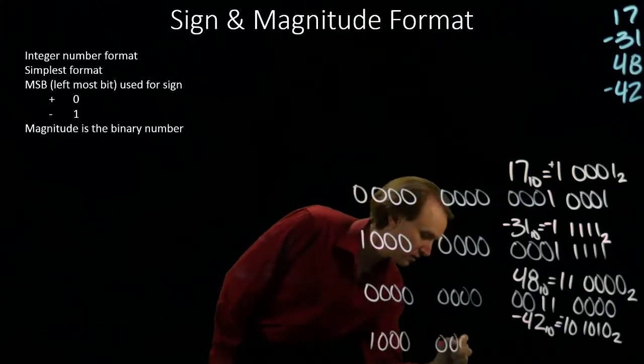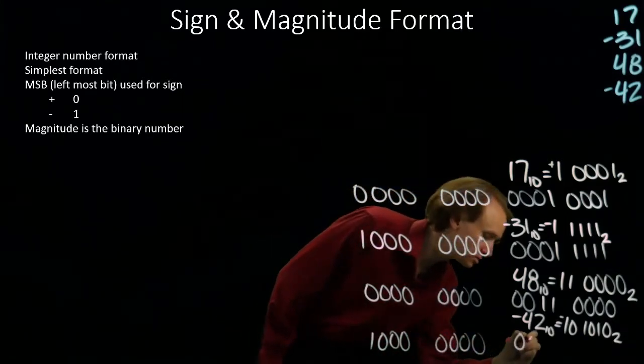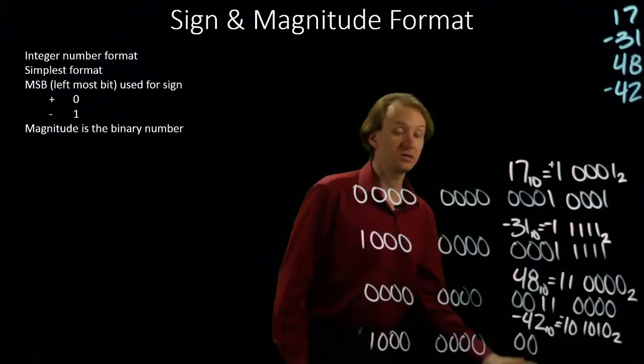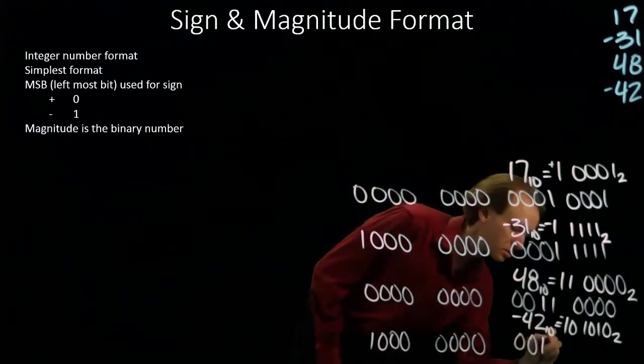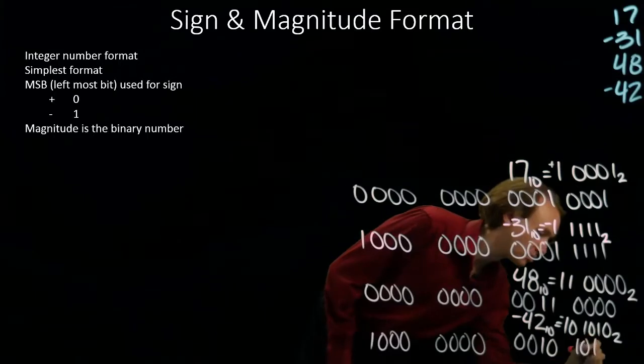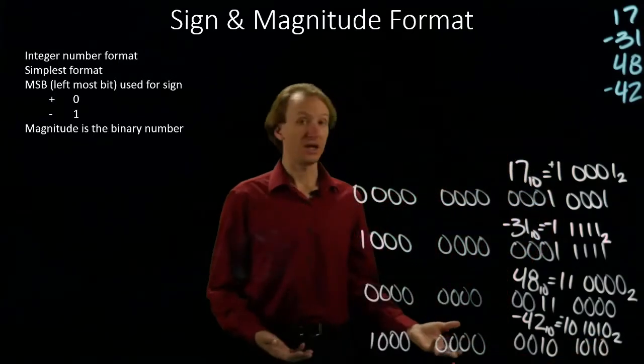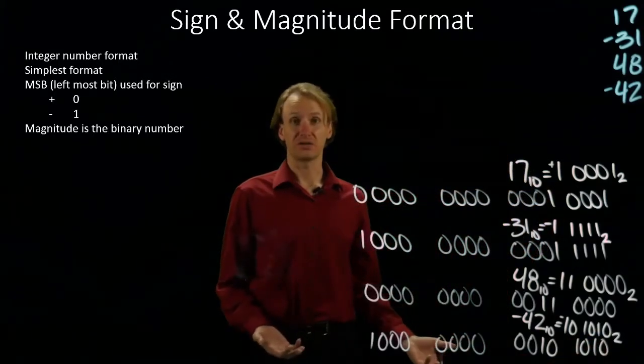I have a number of leading zeros and then the actual magnitude of my number. So there is negative 42 in sign and magnitude format.